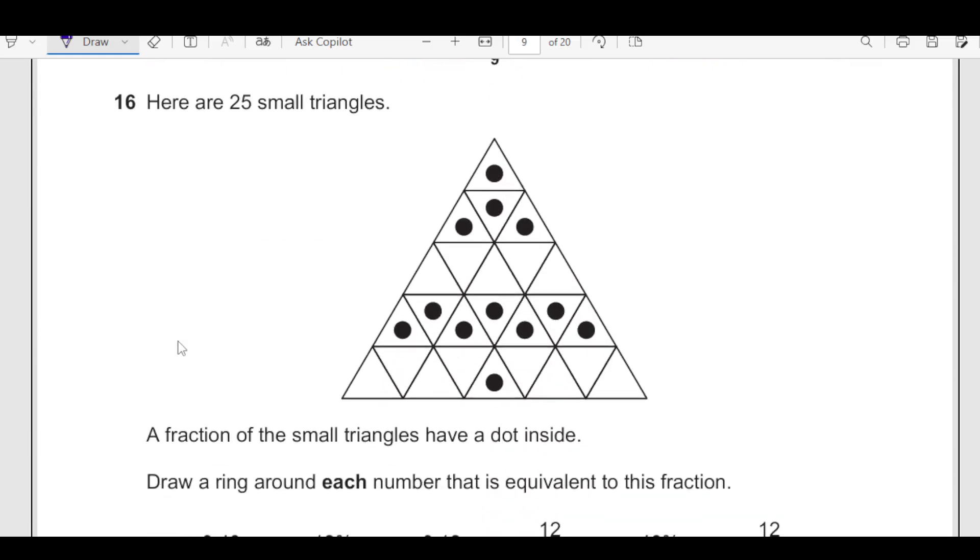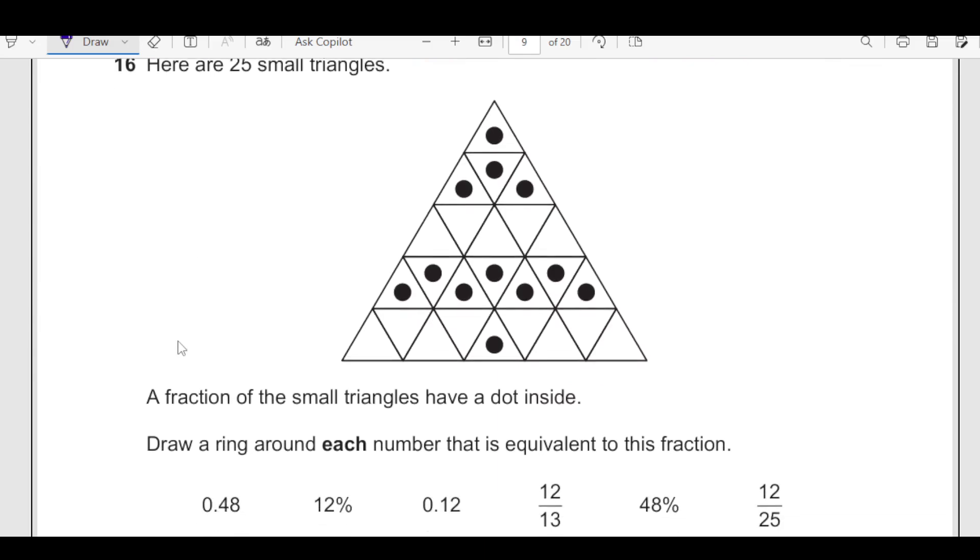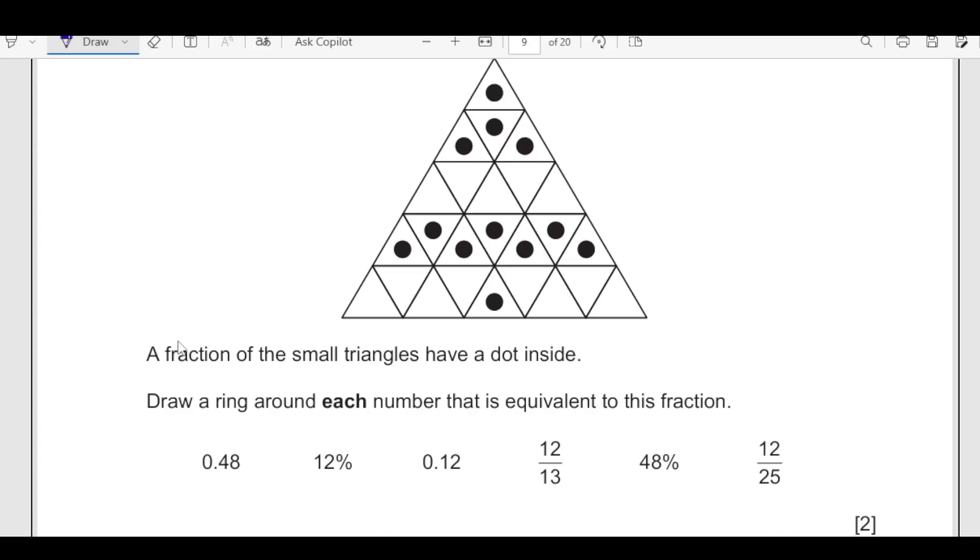Number 16, here are 25 small triangles. A fraction of the small triangle have a dot inside. You can see there are some triangles with dots and some are without dots. Draw a ring around each number that is equivalent to this fraction. We will count how many triangles have dots. We have 1, 2, 3, 4, 5, 6, 7, 8, 9, 10, 11, and 12. So we have 12 triangles with dots out of 25. So 12 over 25, once you divide it is 0.48. We are going to circle this one and also 48% if you multiply this by 100, and 12 of 25, we already got it. So these are all fractions that are equivalent to that one.